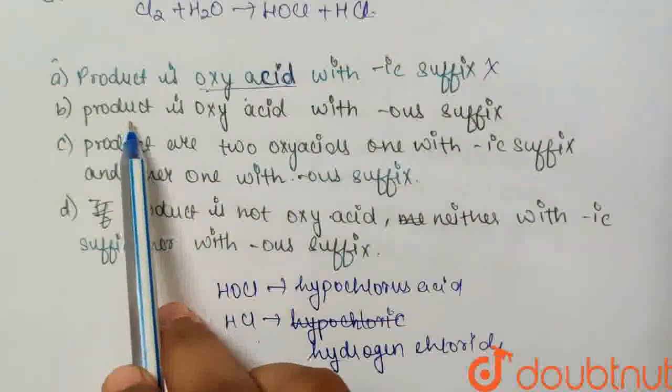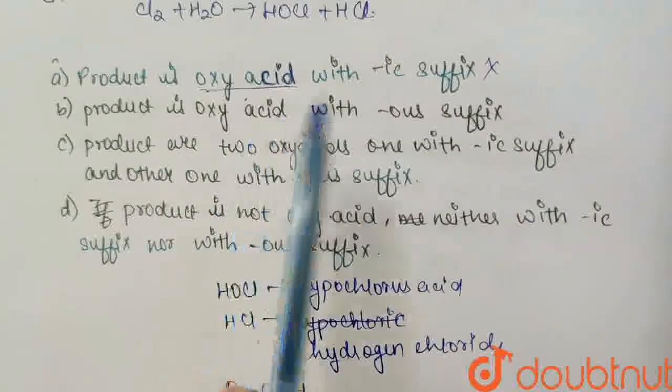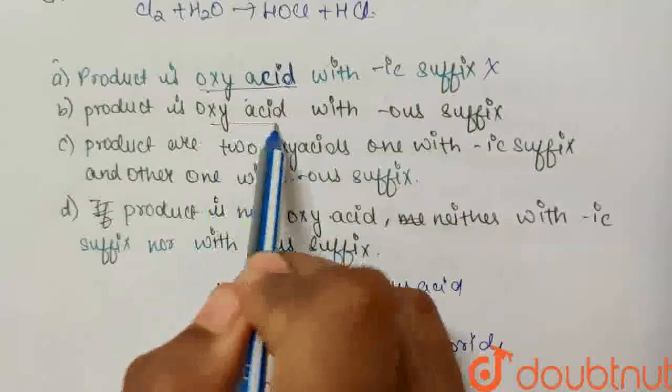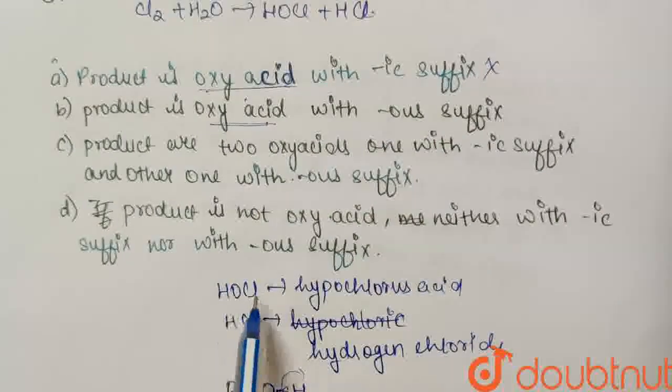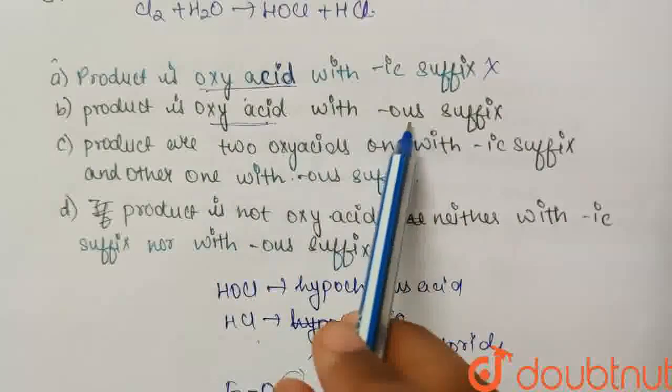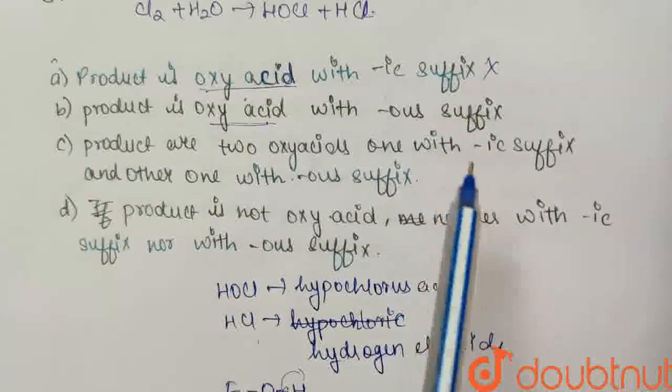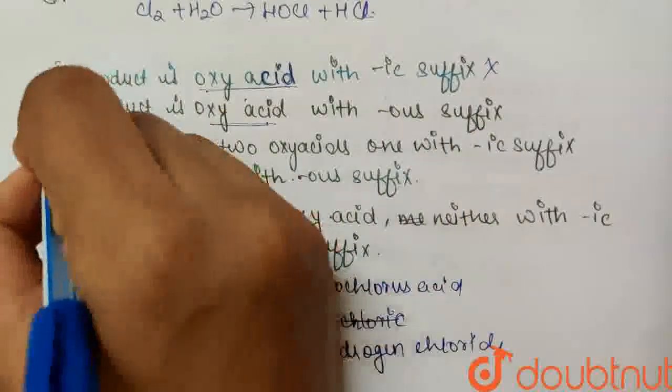Second option is our product is oxy acid with -ous suffix. Okay, so oxy acid is right. Here we have proved that HOCl is oxy acid, and its suffix is -ous suffix because its name is hypochlorous acid. So this option is correct.